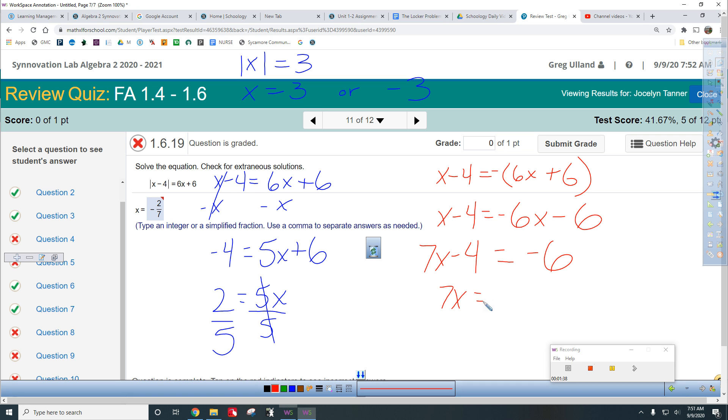7x is negative 2. Divide each side by 7, and there you get your negative 2 sevenths. So, again, the only reason this one doesn't work is that when you plug it in, it doesn't satisfy the initial equation, which happens sometimes with absolute values.